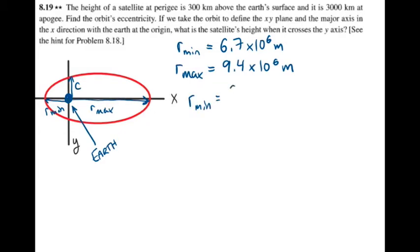rmin equals c over 1 plus epsilon, and rmax equals c over 1 minus epsilon.